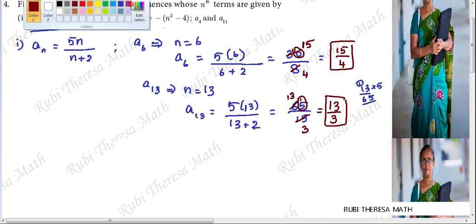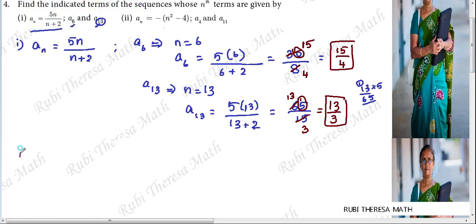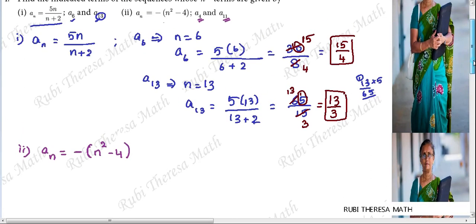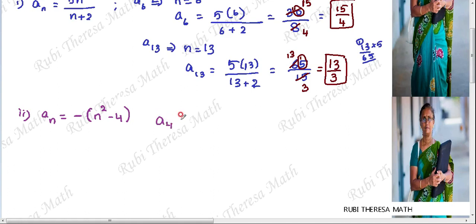The second subdivision: the nth term of that particular sequence is given by a(n) equals minus of (n squared minus 4). We need to find the 4th term and the 11th term, that is a4 and a11. For a4, n value equals 4, so a4 equals minus of (4 squared minus 4).